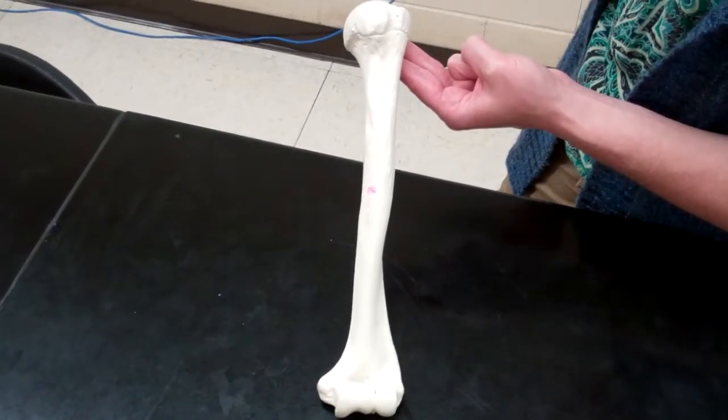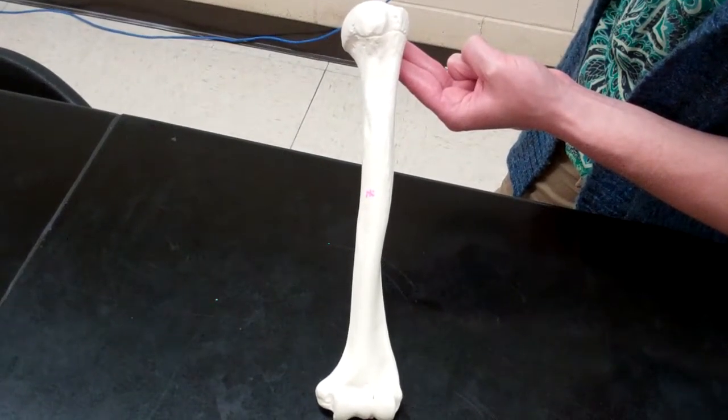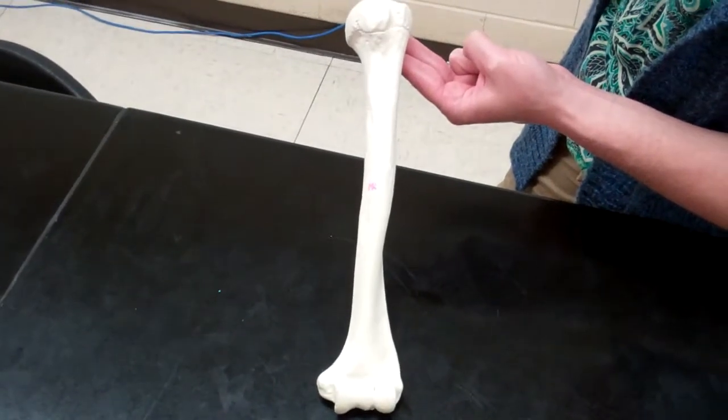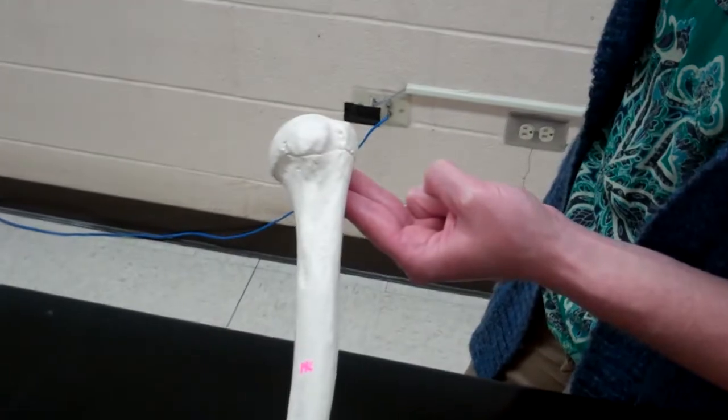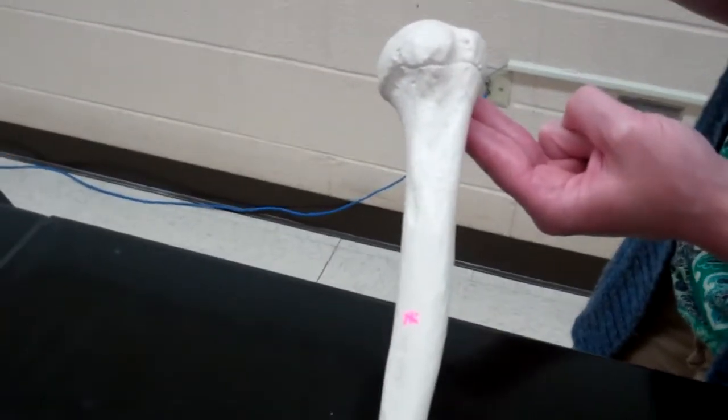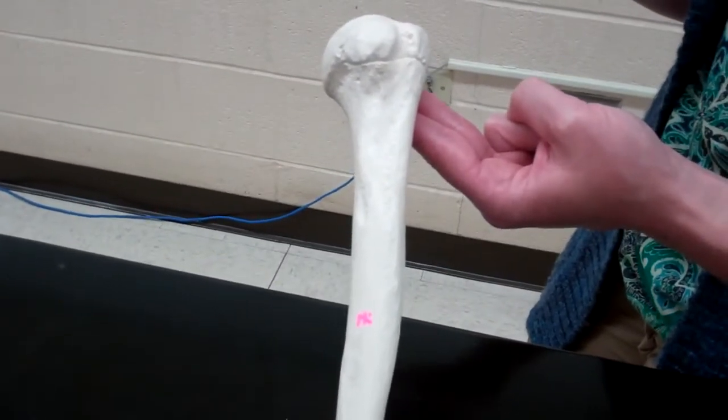We are going to look now at our upper arm bone, or what we could call our proximal arm bone, the humerus. So we are going to zoom in on the top portion, or our superior portion, of the humerus.